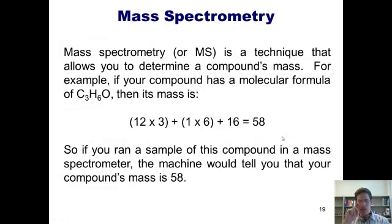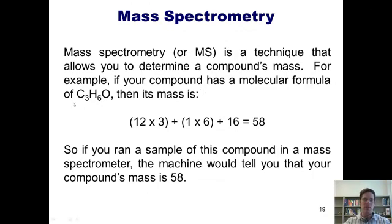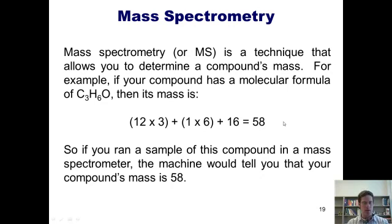We now move on to mass spectrometry. Mass spectrometry, or MS, is a technique that allows you to determine a compound's mass. For example, if your compound had a formula of C3H6O, its mass would be 12 times 3 for carbons, 1 times 6 for hydrogens, and 16 for oxygen — all added together gives you 58. So if you ran a sample of this compound on a mass spectrometer, your machine would tell you the compound's mass is 58.